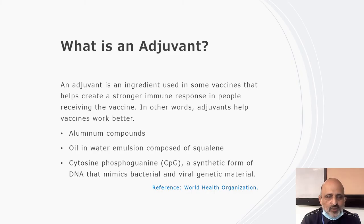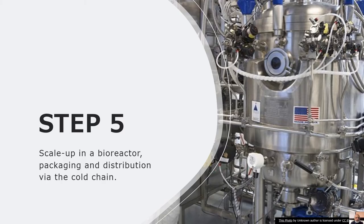Adjuvants are commonly used in vaccination formulations. An adjuvant is an ingredient used in some vaccines that helps create a stronger immune response in people receiving the vaccine. These can be in the form of organic or inorganic compounds. Finally, the vaccine is produced by scaling up in a bioreactor, and packaging and distribution via the cold chain, or in the case of lyophilized vaccines, at room temperature.